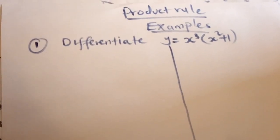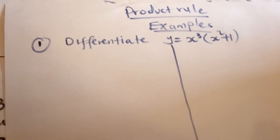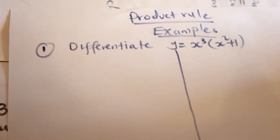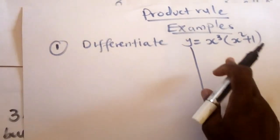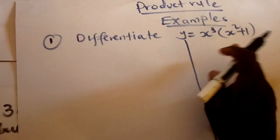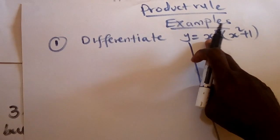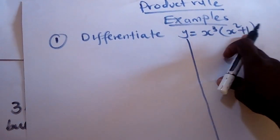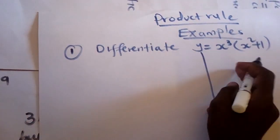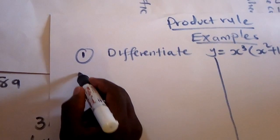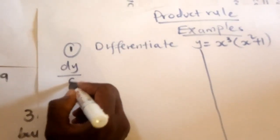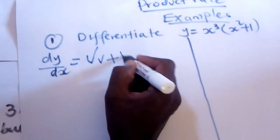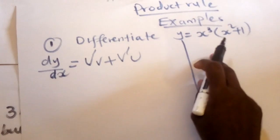In this video we'll be talking about the product rule. To differentiate using the product rule, we use the formula dy/dx = u·v̄ + v·ū, where we have two functions — here y = x³ and y = x² + 1.